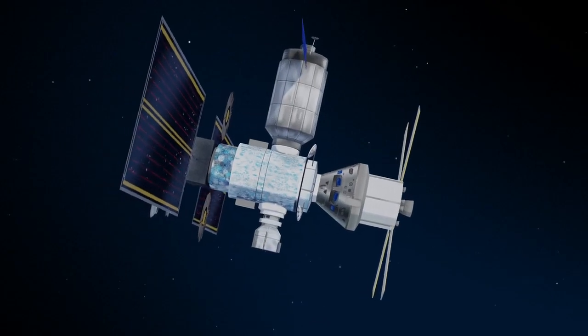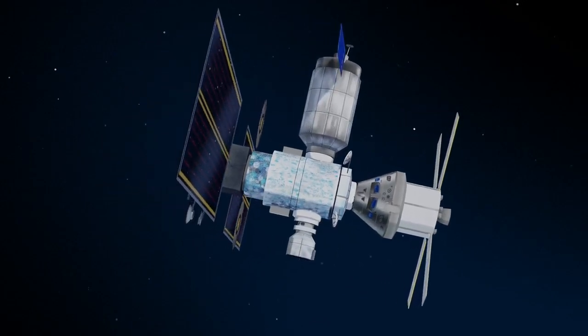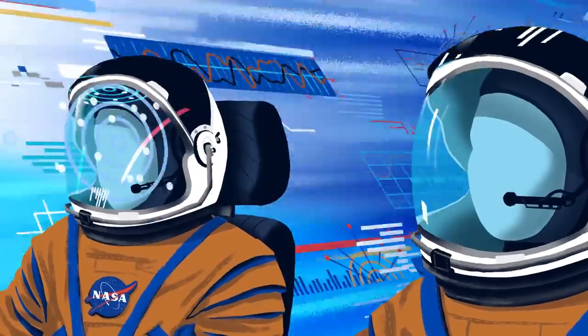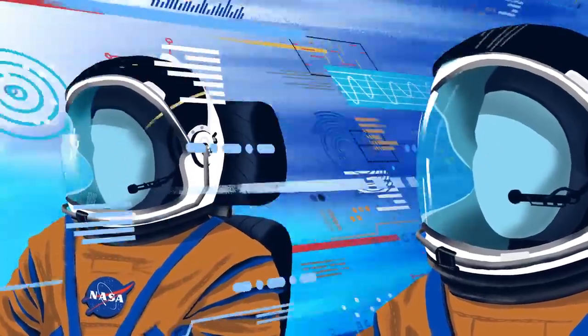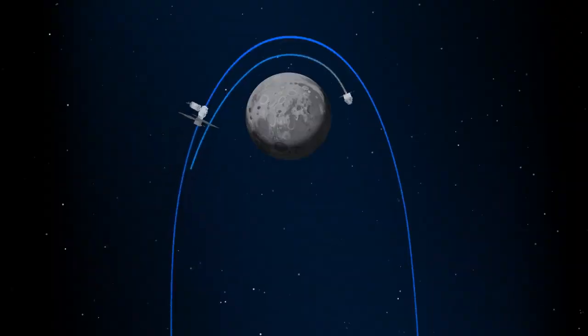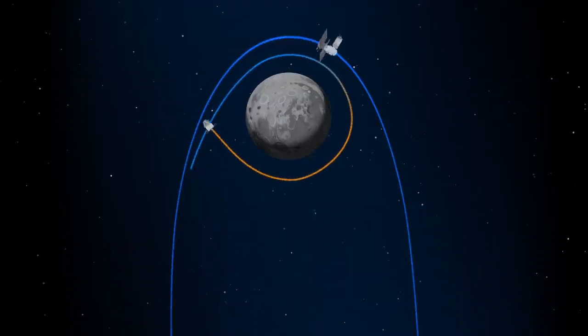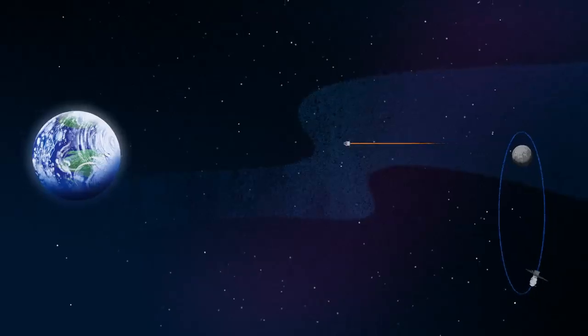Once back aboard the Orion spacecraft and undocked from Gateway, the crew fire their engine once to break out of the halo orbit and once again to sling the spacecraft around the Moon, placing it on a multi-day trajectory back towards Earth.